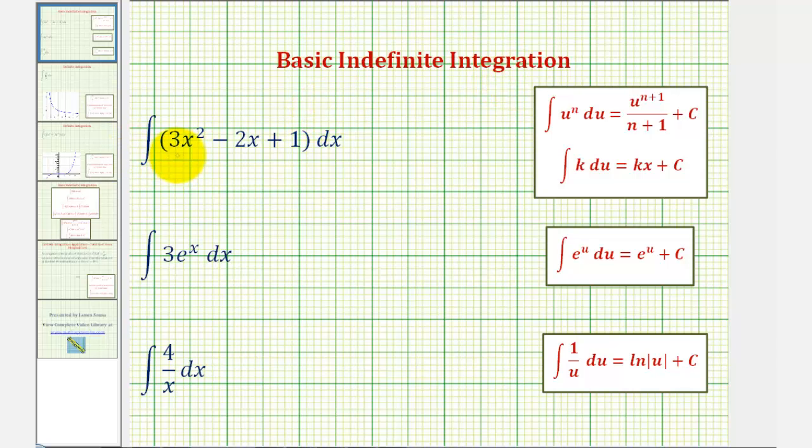We first have the integral of three x squared minus two x plus one integrated with respect to x. So while we could write this as a sum or difference of three separate integrals, we'll go ahead and leave it in this form and integrate each term individually.